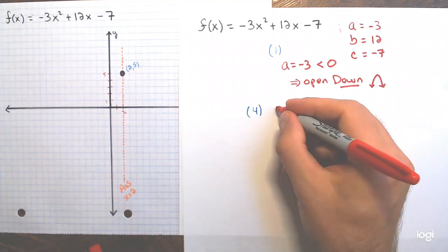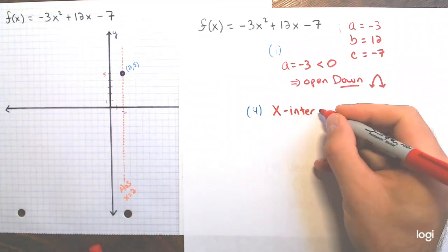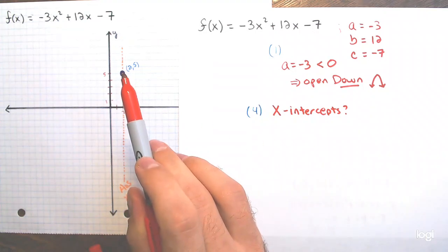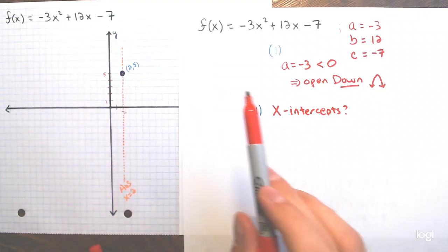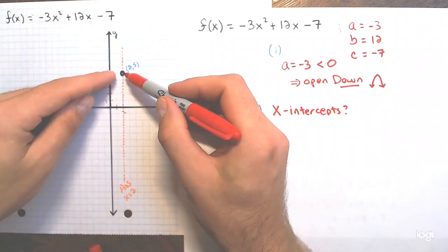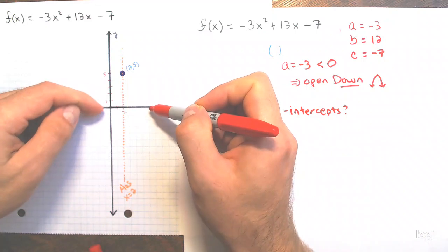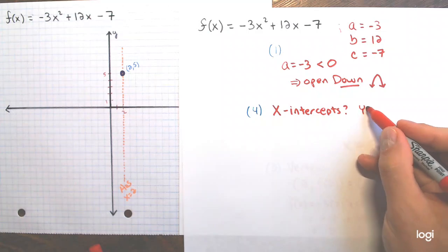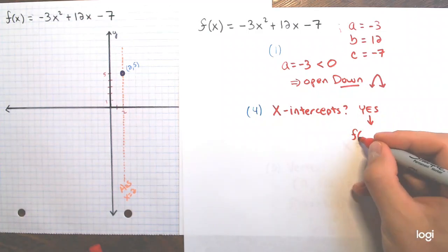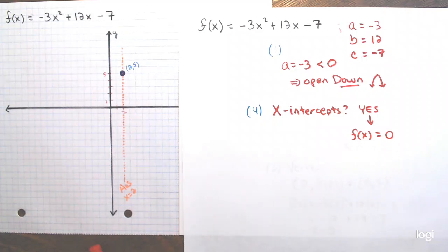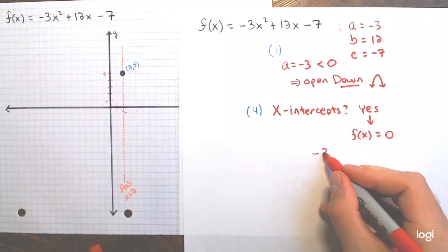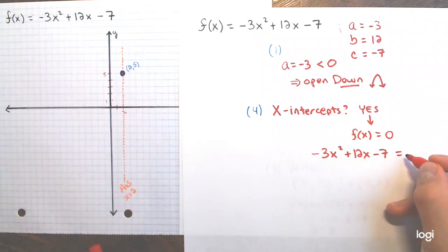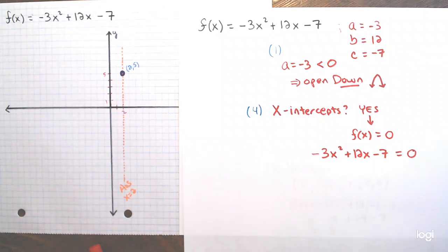Does the parabola have x-intercepts? The vertex is at (2, 5), which is above the x-axis, and it opens downward — so yes, it will definitely cross the x-axis twice. We proceed to solve negative 3x squared plus 12x minus 7 equals zero using the quadratic formula.